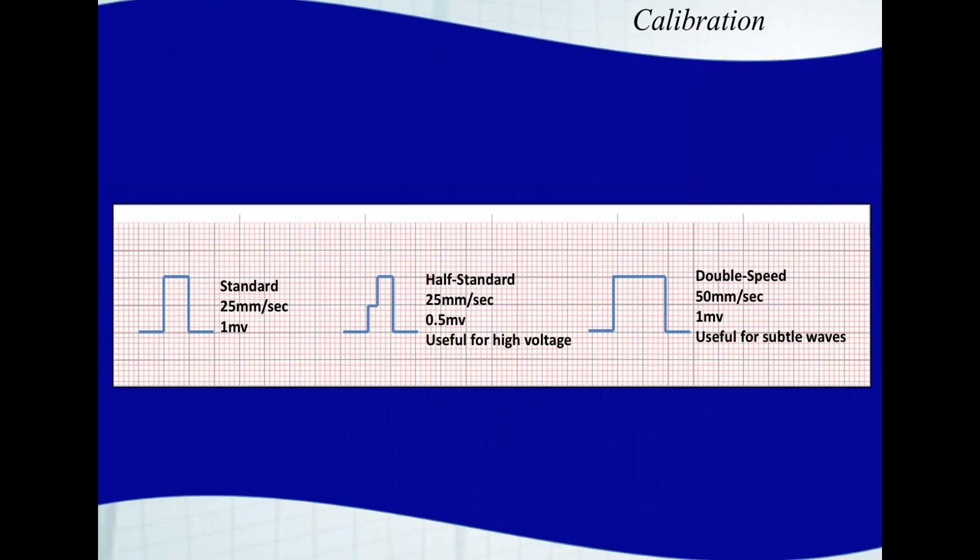Sometimes when an EKG prints out, it'll print a little calibration mark. Most American EKGs print with a one millivolt standard calibration at 25 millimeters per second print speed.